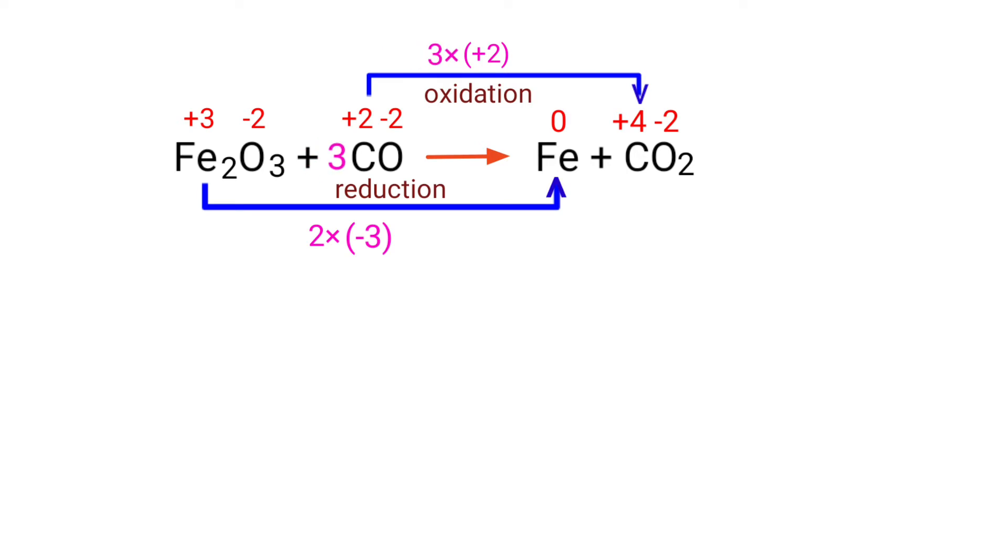Now you can write the equation as Fe2O3 plus 3CO gives us Fe plus CO2. Now you can balance the number of atoms in this equation.